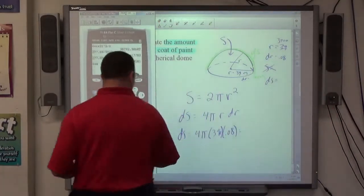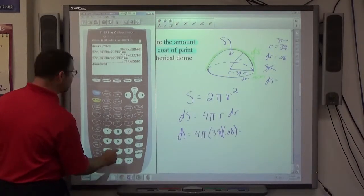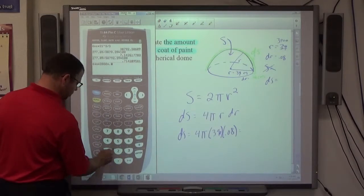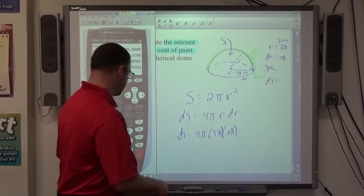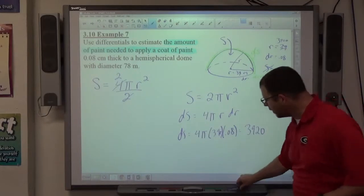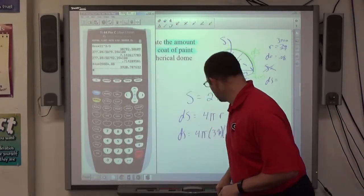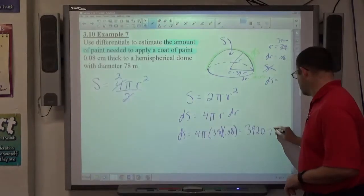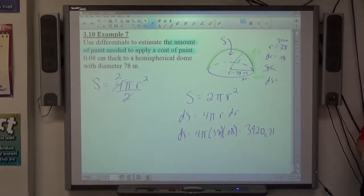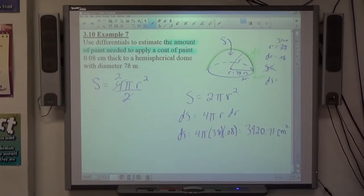And that means ds is going to equal 4π times 3900 times .08. So 4 times π times 3900 times .08. That comes out to 3920.71. Okay, what unit do you think goes on that? Centimeters. Centimeters squared, right? 3920.71 centimeters squared paint.